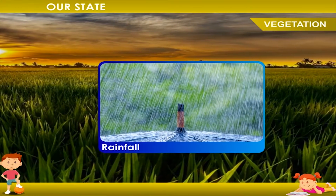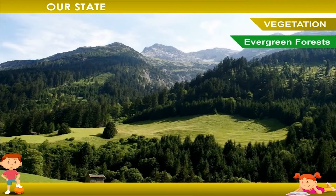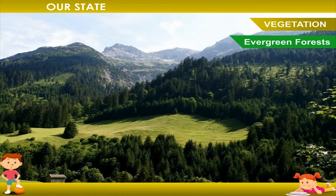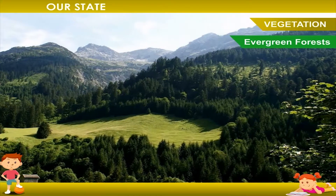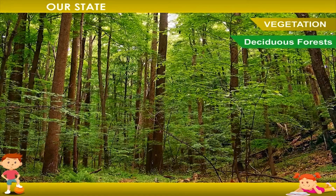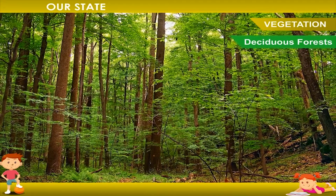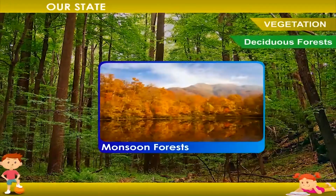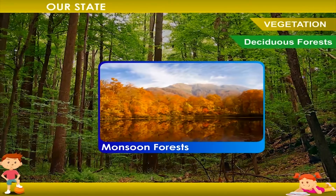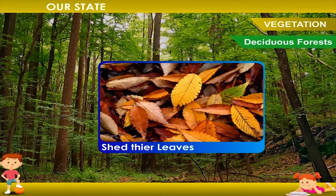The type of forest depends upon the amount of rainfall. Forests can be classified into evergreen forests, which are found in the hot and rainy parts of our country, and deciduous forests, also called monsoon forests. The trees in deciduous forests shed their leaves once in the summer.